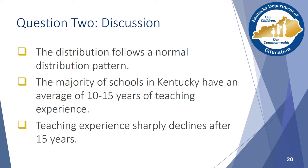We also know that the majority of schools in Kentucky have a teaching staff with an average experience of 10 to 15 years because the highest bars fall within that range. You may have noticed that the average years of teaching experience in schools drop sharply after 15 years. A next step may be to look at which schools have very high average teaching experience and see what other characteristics in those schools contribute to the longevity of their teachers.